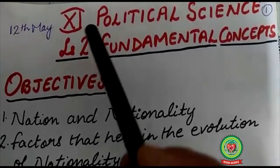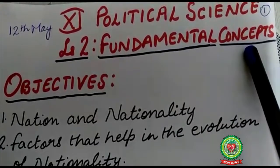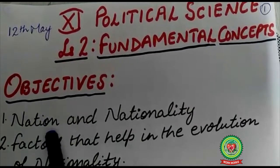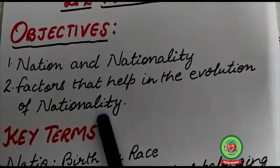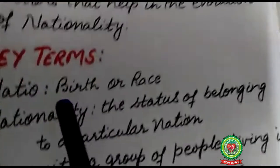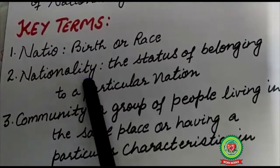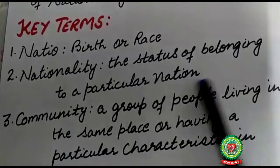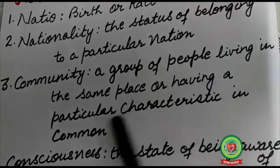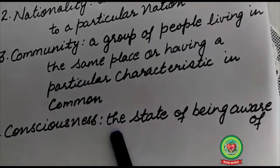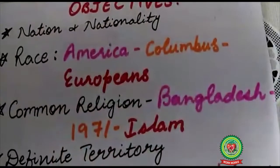Hello students, welcome to Plus One Political Science class. Today I will continue with Lesson 2: Fundamental Concepts. The objectives of today's class are nation and nationality, and the factors that help in the evolution of nationality. Before the discussion, I will discuss the key terms with you. First term is 'nation' — birth or race. 'Nationality' — the status of belonging to a particular nation. 'Community' — a group of people living in the same place or having a particular characteristic in common. 'Consciousness' — the state of being aware.